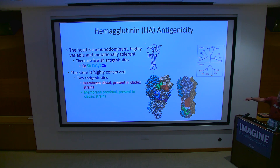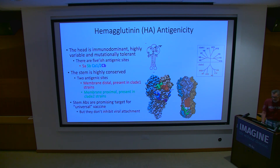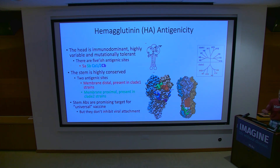The stem is on the bottom, the globular domain is on top. People are super excited about stem antibodies because of universal flu vaccination potential — the stem is so conserved.